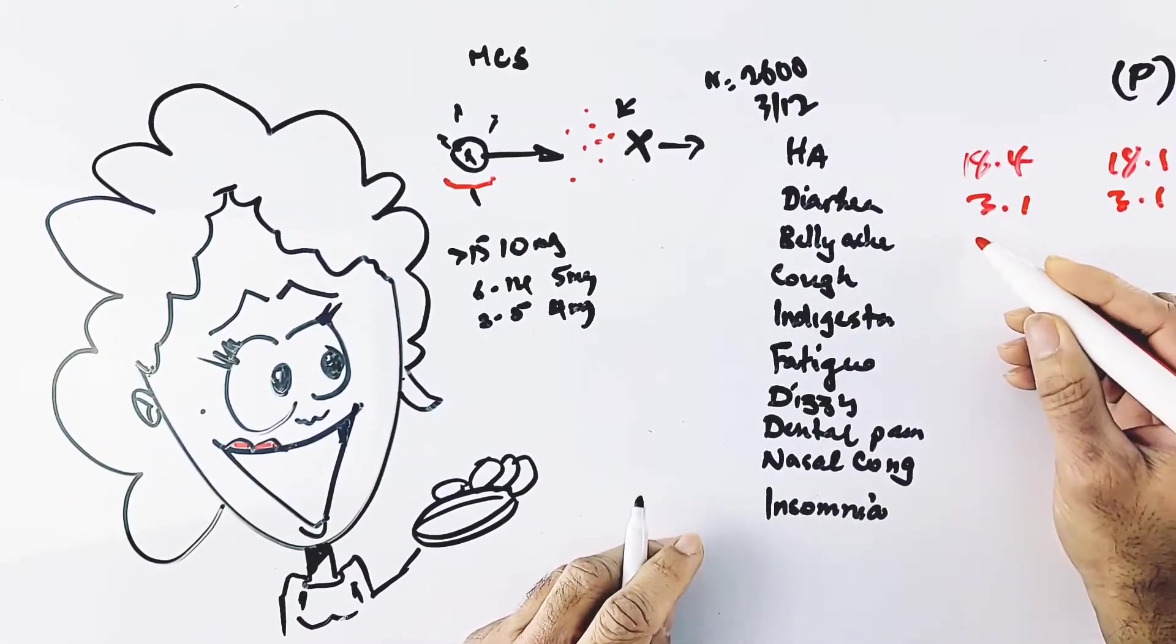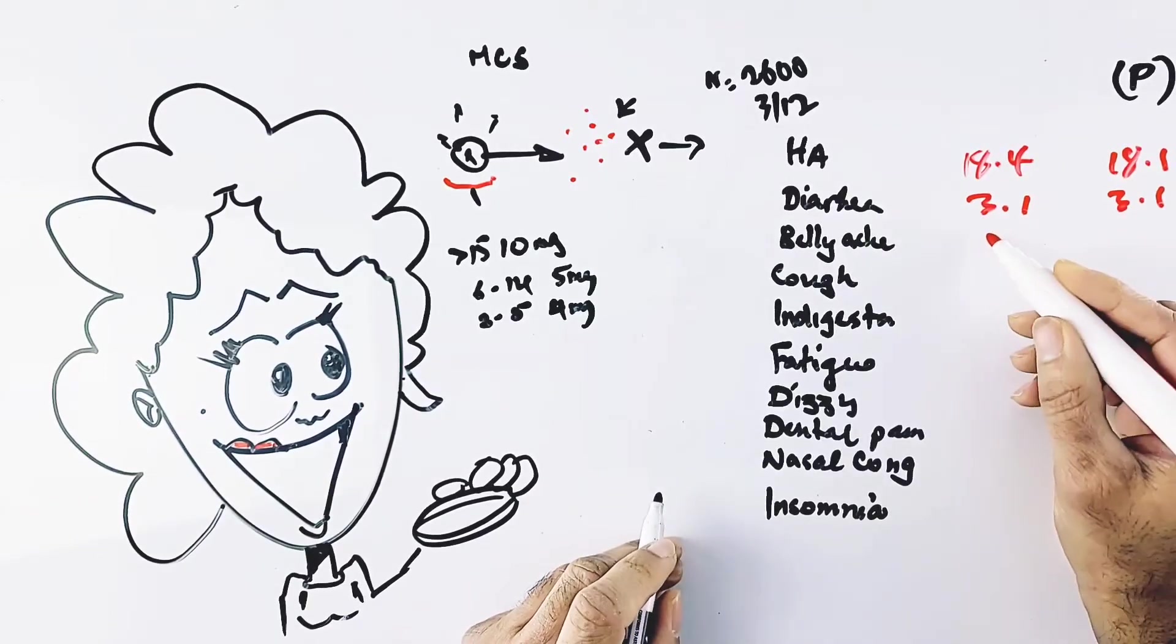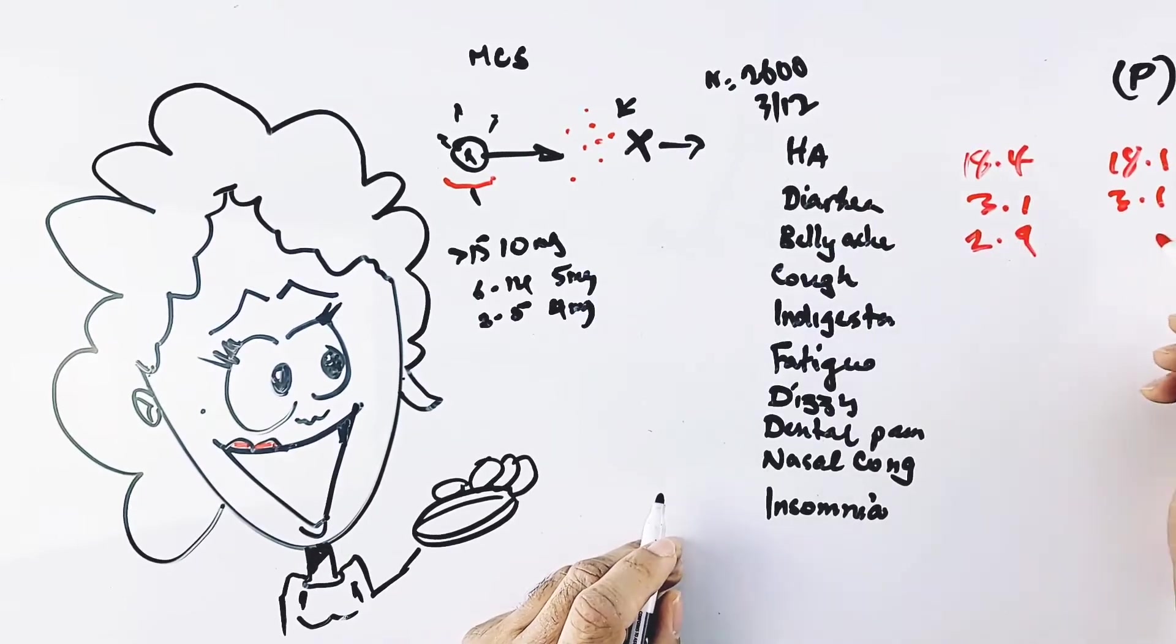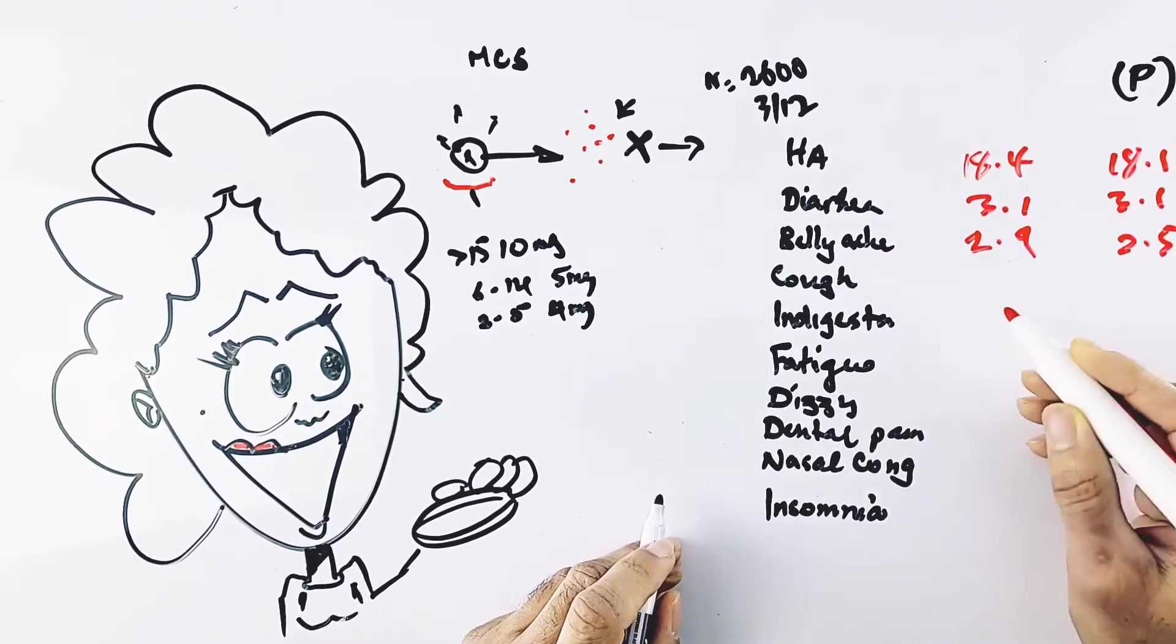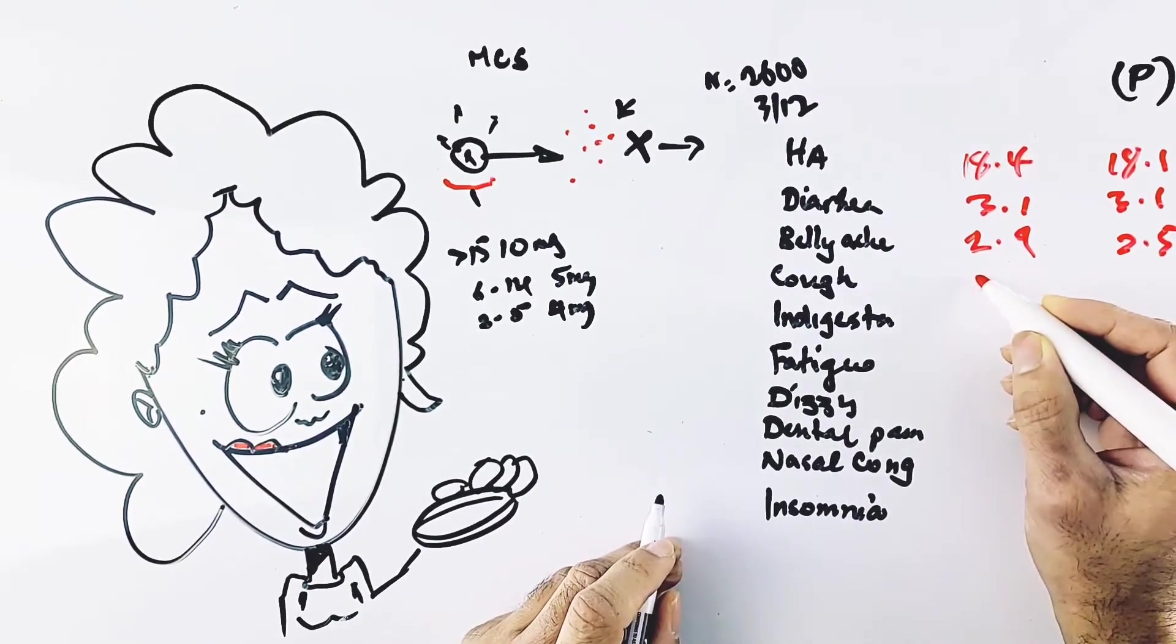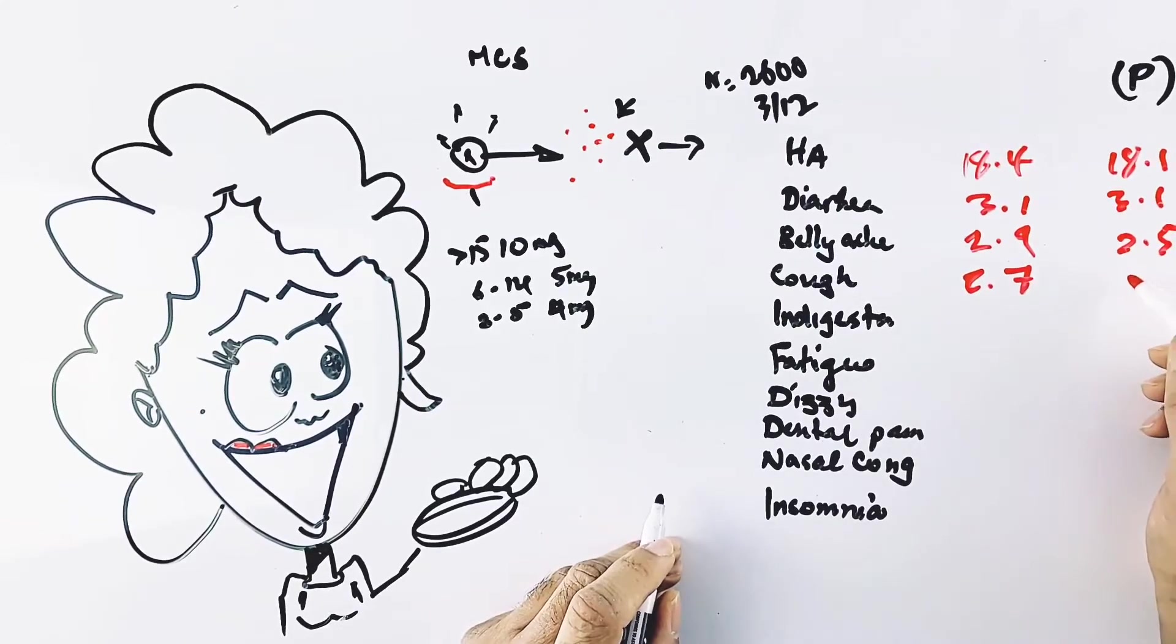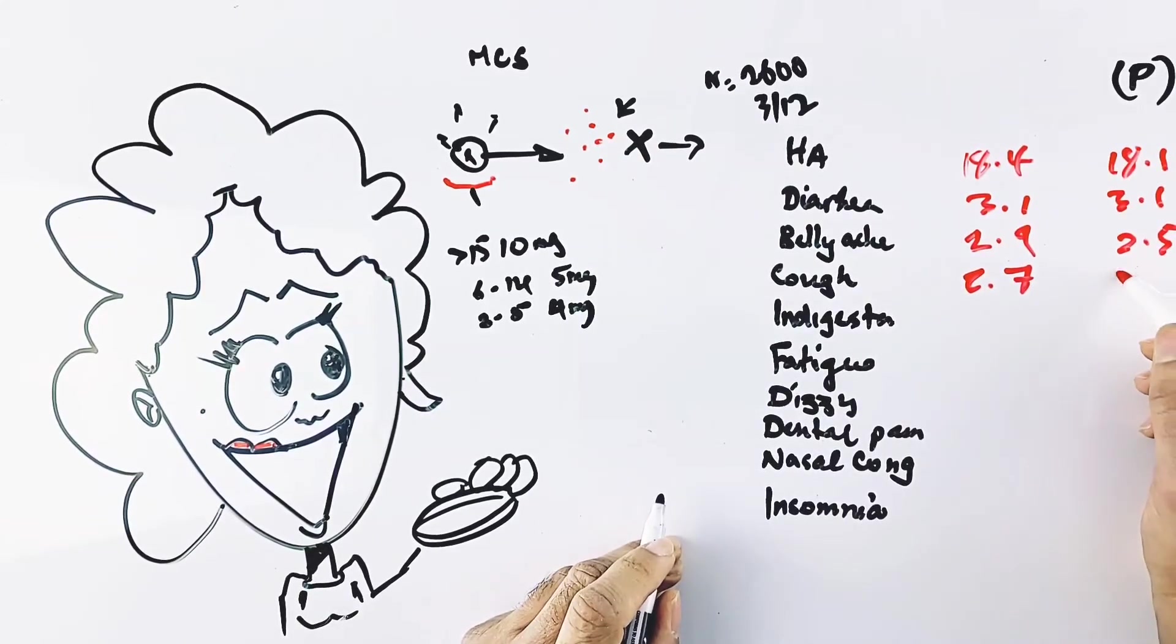Next was belly pain—2.9% of people taking the drug versus 2.5% on placebo. Cough came in at 2.7% versus 2.4% on placebo.